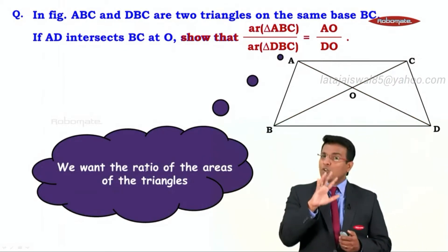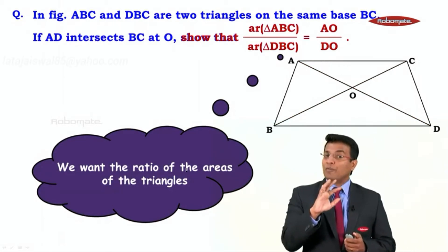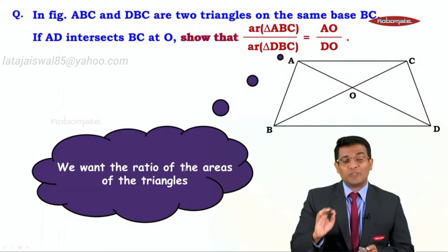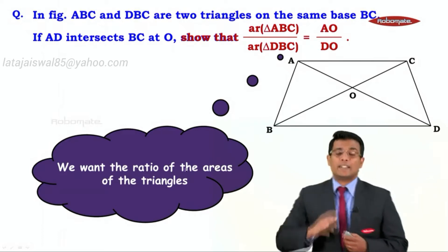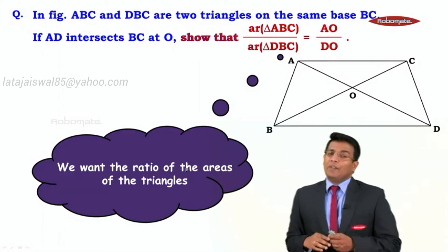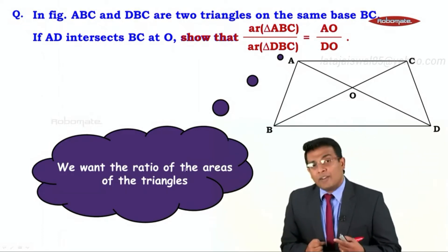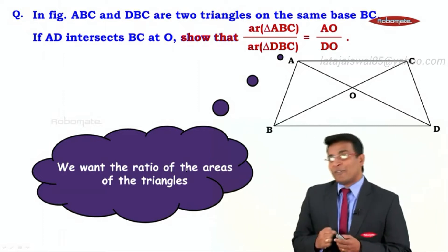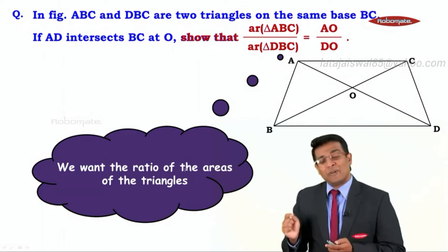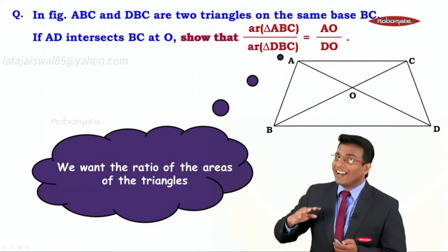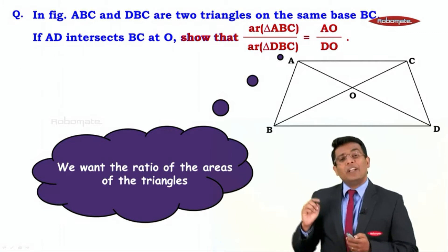Now when we look at this proof, what do we want? We want the ratio of the areas of the triangles. When we talk about the area of a triangle, we know the formula: it is half into base into height. That means we are talking about the base and the height.